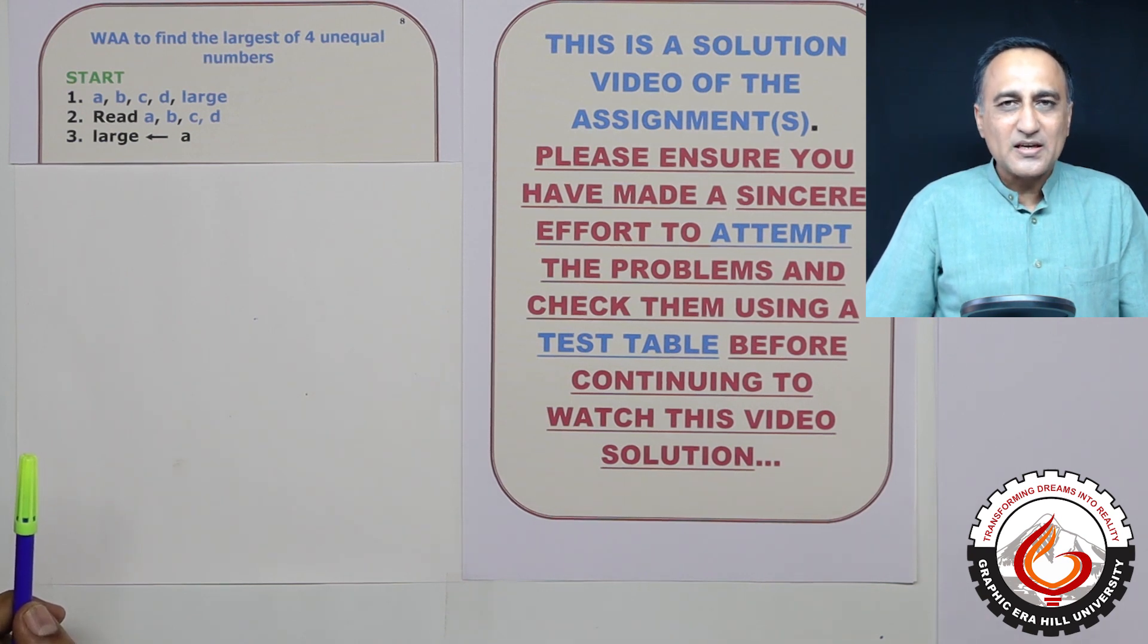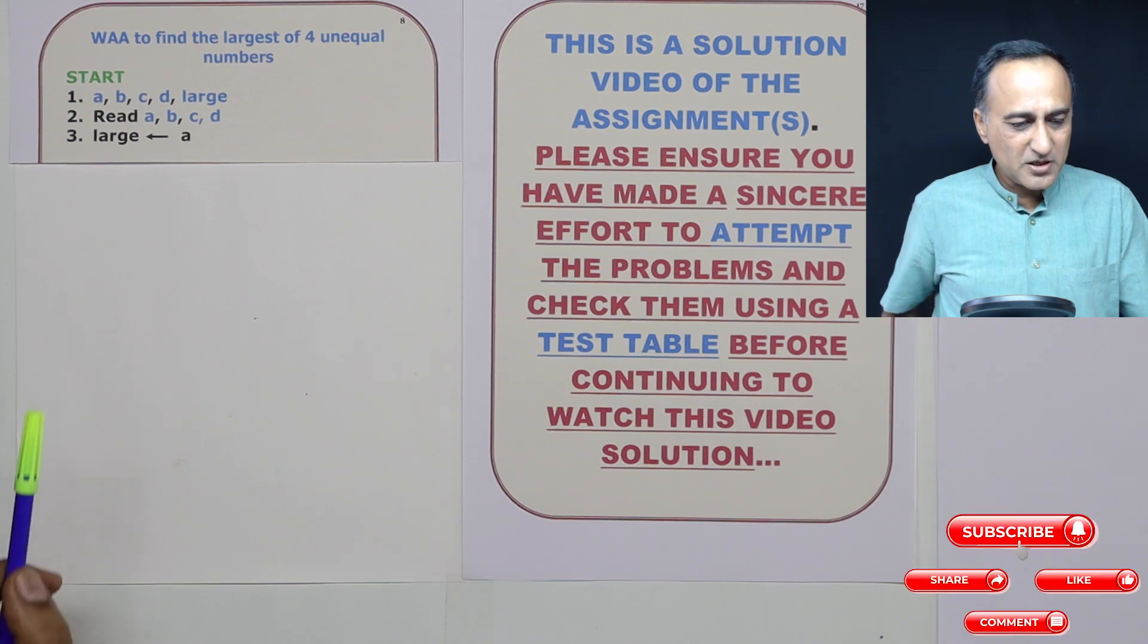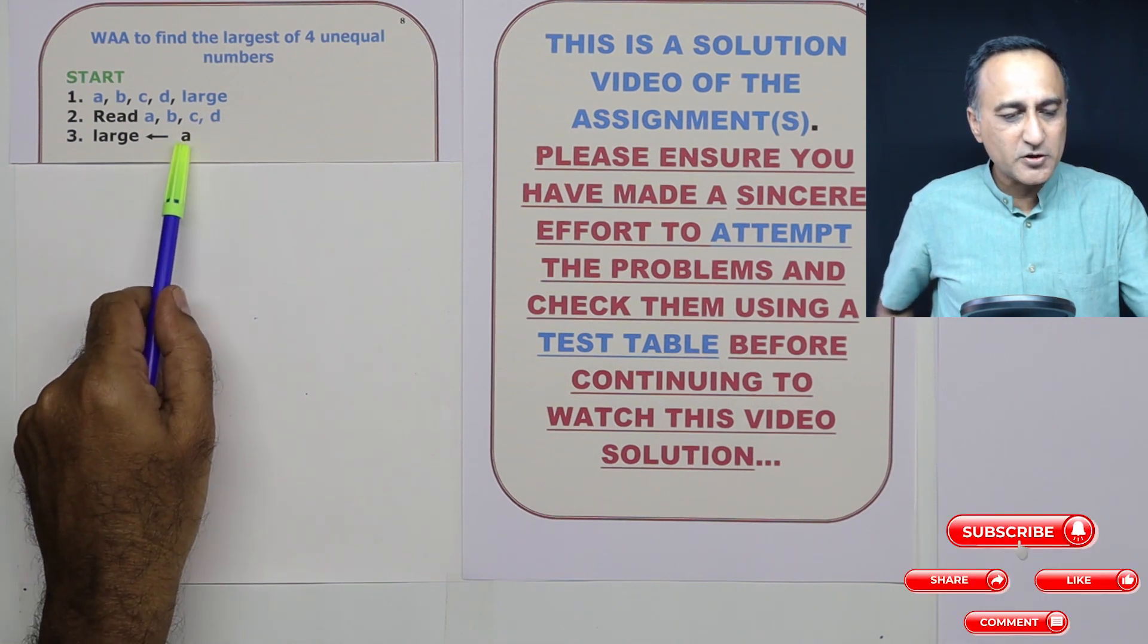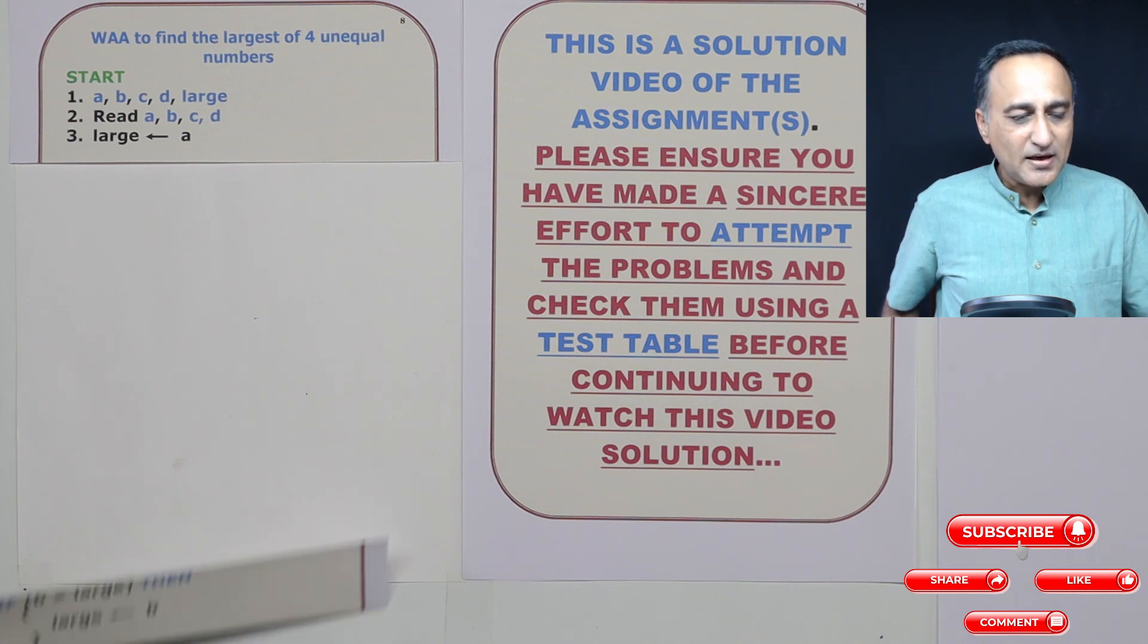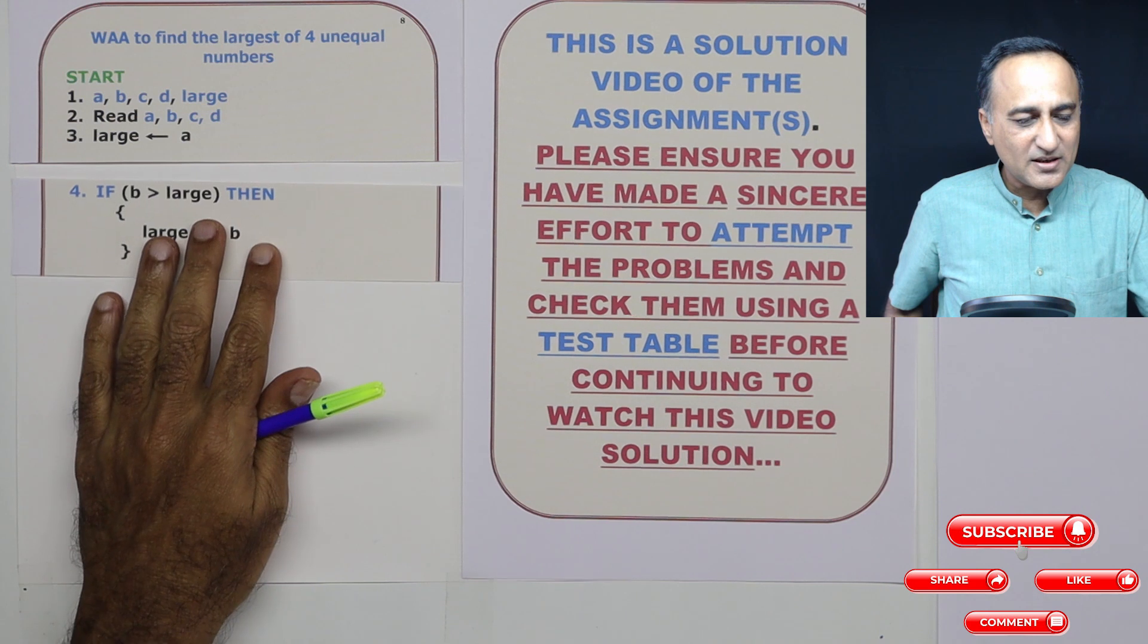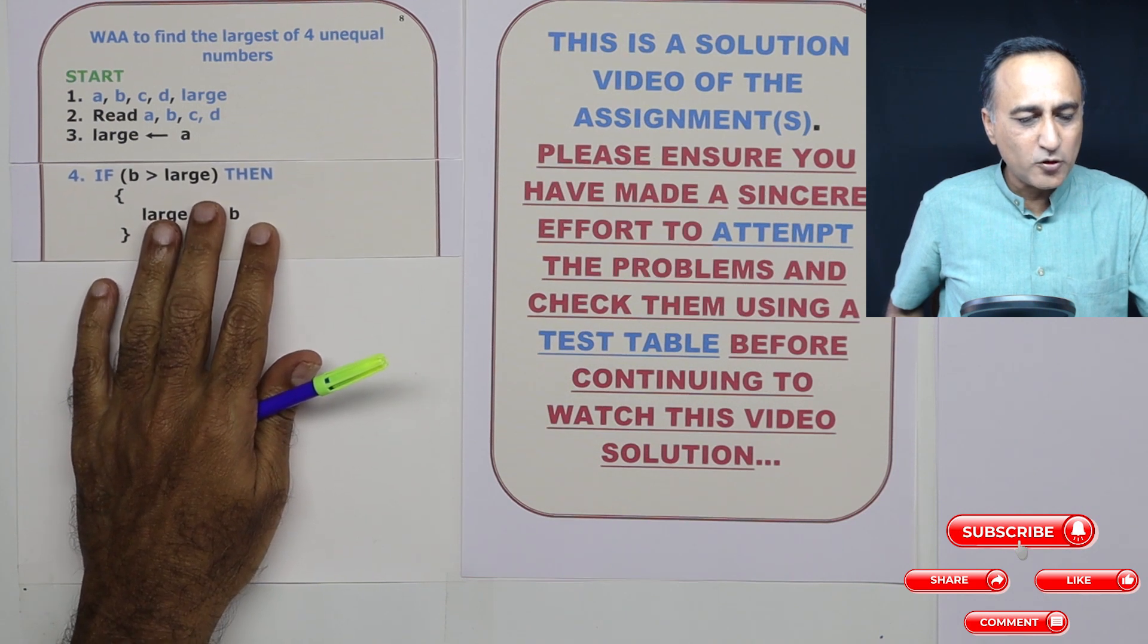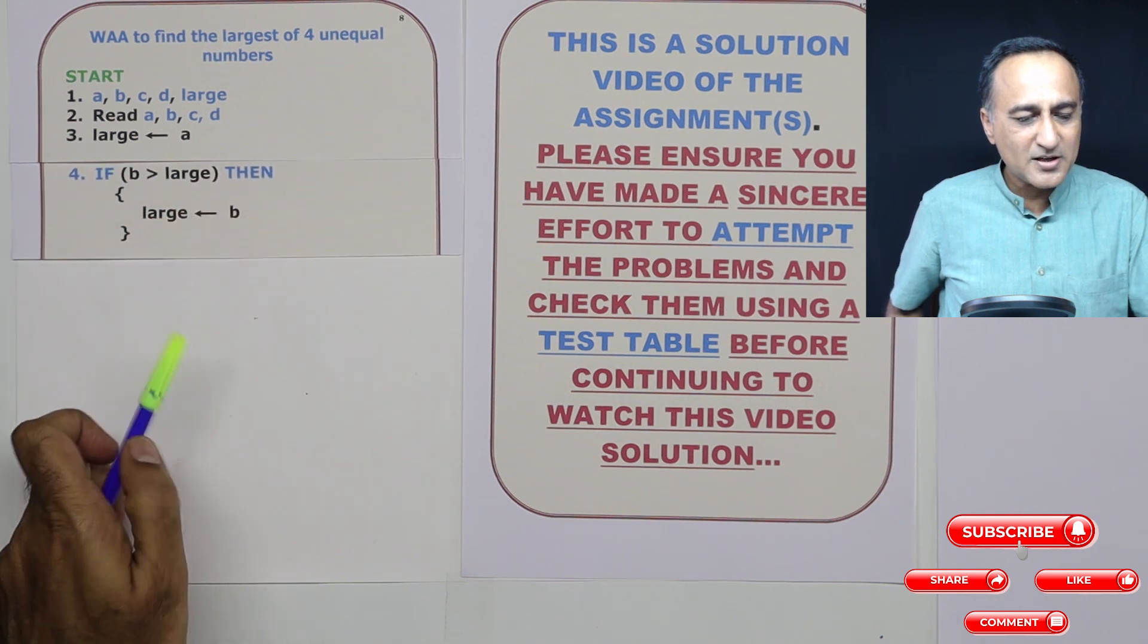Then what I'm assuming is, I have not seen the other numbers, so I'm going to process one number at a time. Since I'm processing one number at a time, I'm going to initially assume that A itself is the largest. Then in step number four, I'm going to compare B with large. If B is bigger than large, then I'm going to replace the value of large with B.